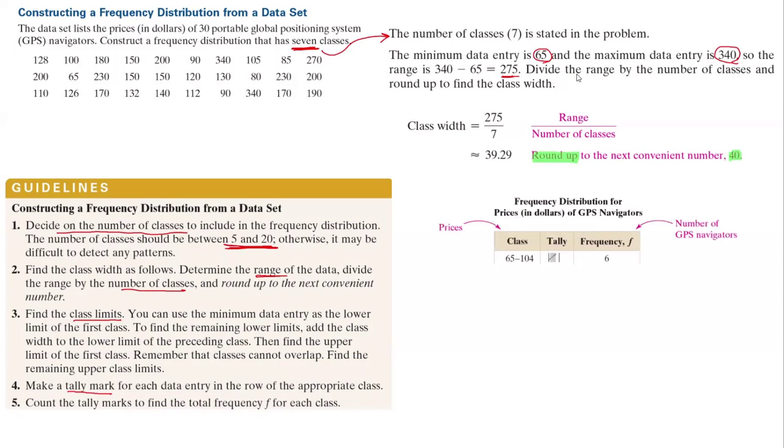Let us create our table. For our table, the very first class starts at the minimum value which is 65 and then stops at 104.